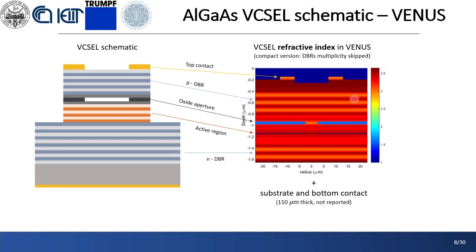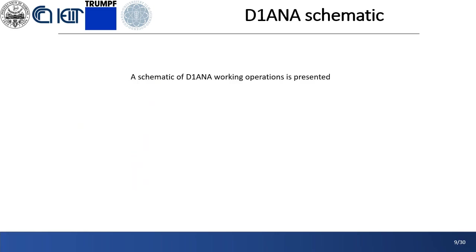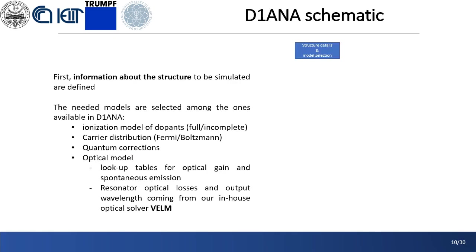Of course, the substrate and the bottom contact are also simulated, even though they are not shown here. Now, the analysis briefly presented: first, the details about the simulated structure must be uploaded, such as the doping profile, the molar fraction, the length of the layers, and the models among the available ones are selected — full or incomplete ionization of dopants, Fermi or Boltzmann statistics for carrier distribution, quantum correction to describe accurately the quantum wells and connect their population to the bulk one, and the optical model obtained from lookup tables for the gain and the spontaneous emission, and from the optical solver VELM for the optical losses and the output wavelength.